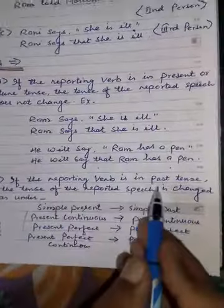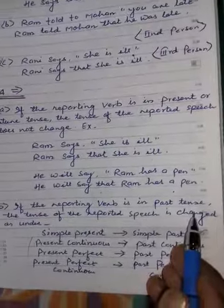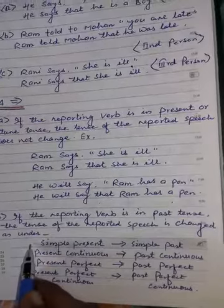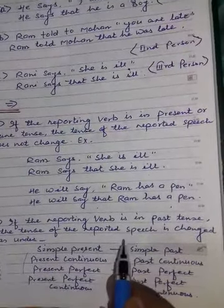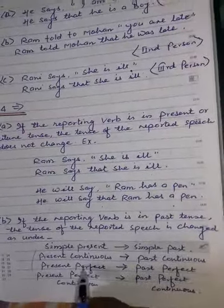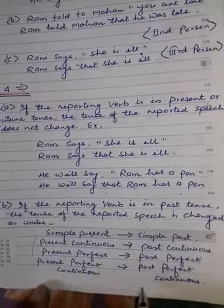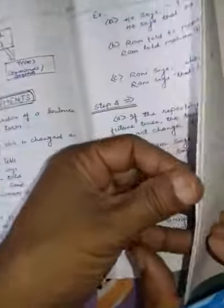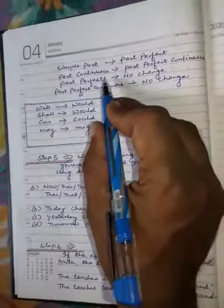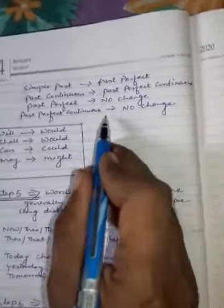If the reporting verb is in past tense, the tense of the Reported Speech is changed as follows: Simple Present becomes Simple Past; Present Continuous becomes Past Continuous; Present Perfect becomes Past Perfect; Present Perfect Continuous becomes Past Perfect Continuous; Simple Past becomes Past Perfect; Past Continuous becomes Past Perfect Continuous; Past Perfect — no change; Past Perfect Continuous — no change.